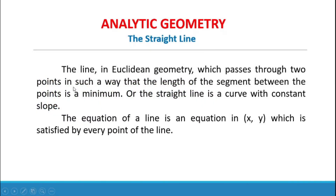The straight line — the line in Euclidean geometry which passes through two points in such a way that the length of the segment between the points is a minimum — or the straight line is a curve with constant slope. The equation of a line is an equation in x and y which is satisfied by every point of the line.